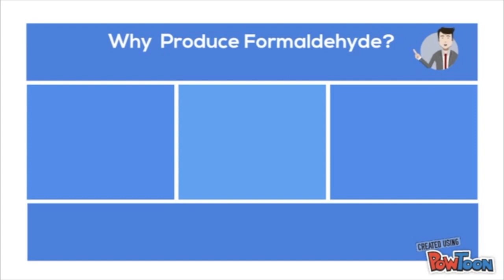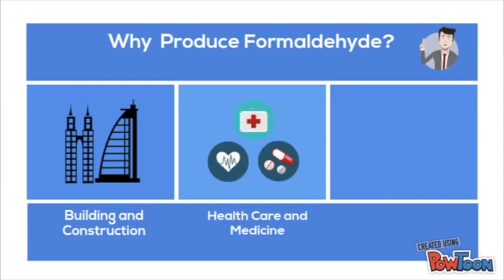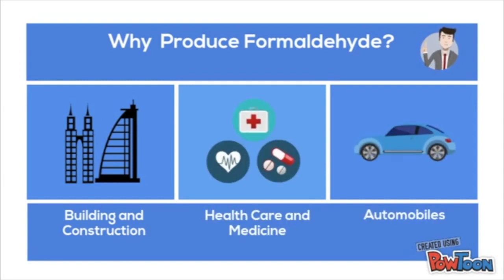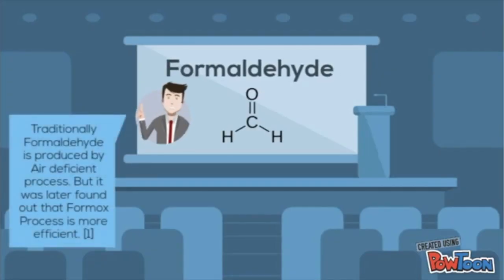Formaldehyde is used in producing hundreds of items that improve everyday life. In construction, it's used to produce resin. In medicine, it's used to produce vaccines. And in automobiles, it's used to make vehicles lighter and more efficient.